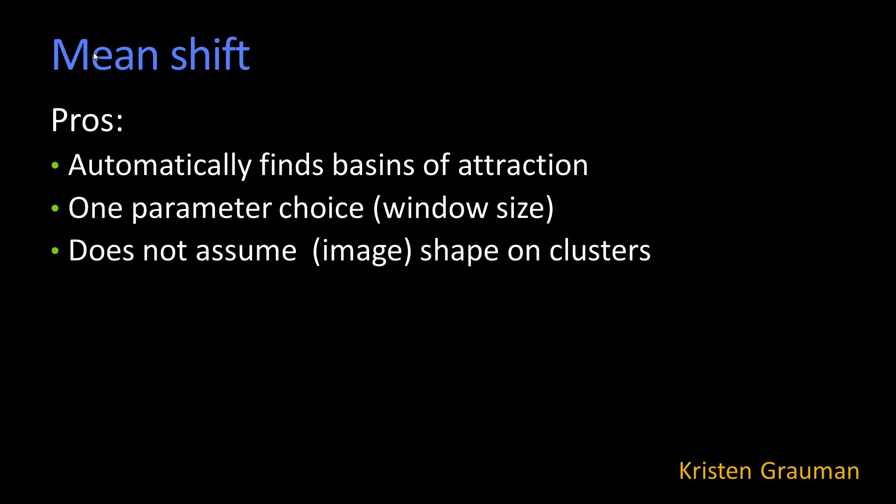It doesn't make any assumptions about the shape of the segment or cluster in the image. It just works in the probability distribution of the pixels. It's a very generic technique for finding multiple modes, and people use mean shift for a variety of things like tracking.